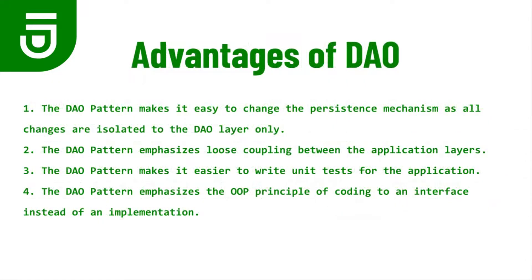The data access object has some advantages. First, the DAO pattern makes it easy to change the persistence mechanism, as all changes are isolated to the DAO layer only. Second, the DAO pattern emphasizes loose coupling between the application layers. Third, the DAO pattern makes it easier to write unit tests for an application. And fourth, the DAO pattern emphasizes the object-oriented programming principle of coding to an interface instead of an implementation. We'll take a look at each of these advantages as we go through our example data access object.